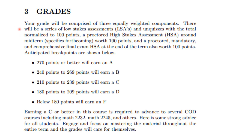Students are often interested in grades. Your grades will be comprised of three equally weighted components. There will be a series of low-stakes assessments — I call them LSAs — and un-quizzes, with the total of these normalized to 100 points. There will be a proctored high-stakes assessment, HSA, around midterm, worth 100 points. And a proctored, mandatory, and comprehensive final exam, HSA, at the end of the term, also worth 100 points. The anticipated breakpoints are: 90% or better earns an A, 80% a B, 70% a C, and so forth. Earning a C or better in this course is required to advance to several COD courses, including Calculus II and Linear Algebra. My strong advice: engage and focus on mastering the material throughout the entire term, and the grades will take care of themselves.